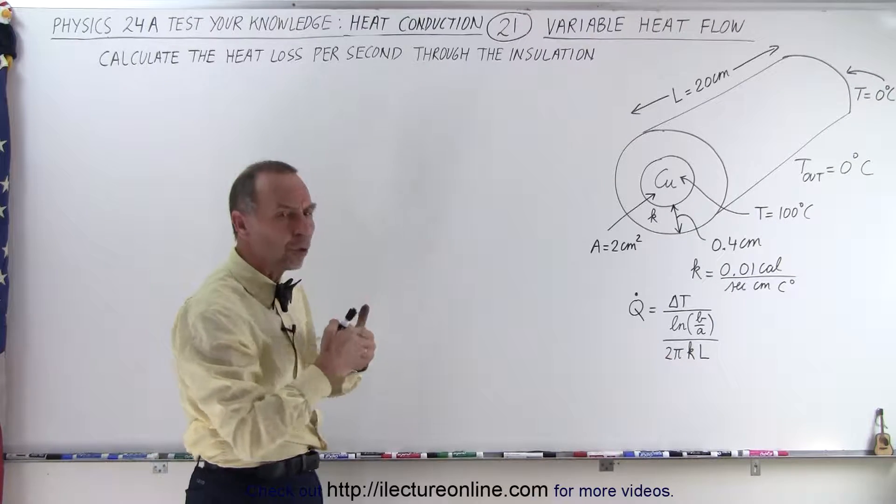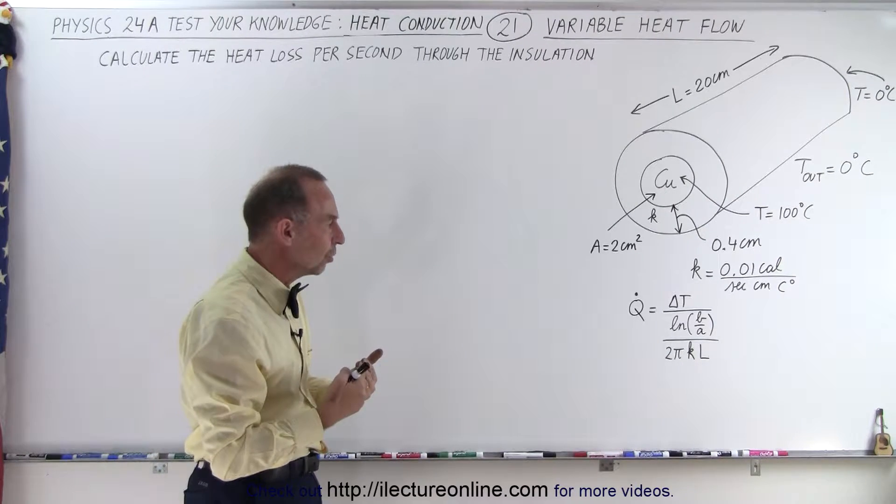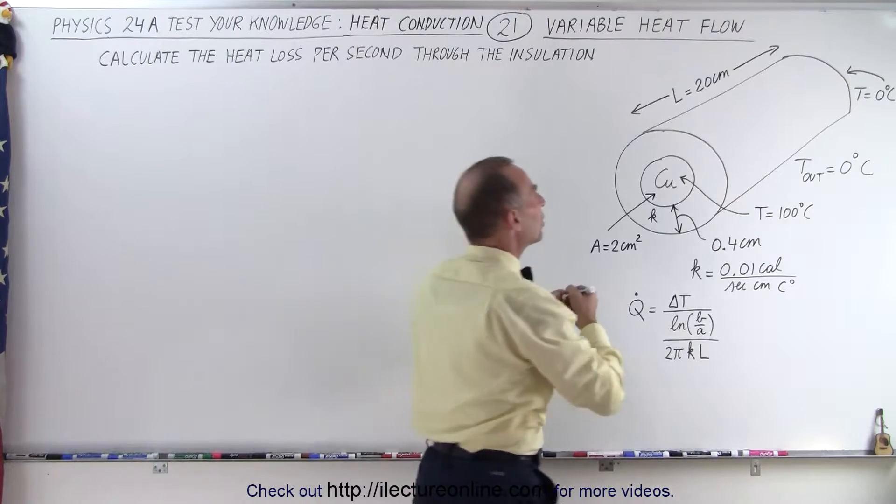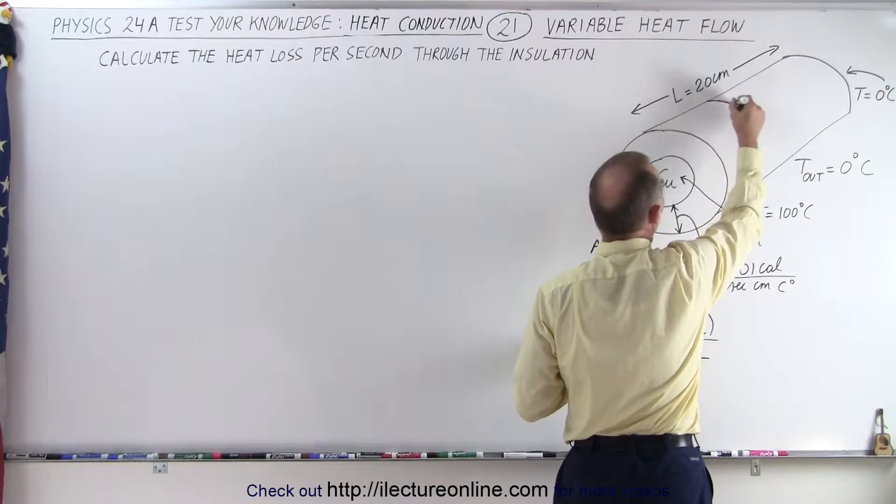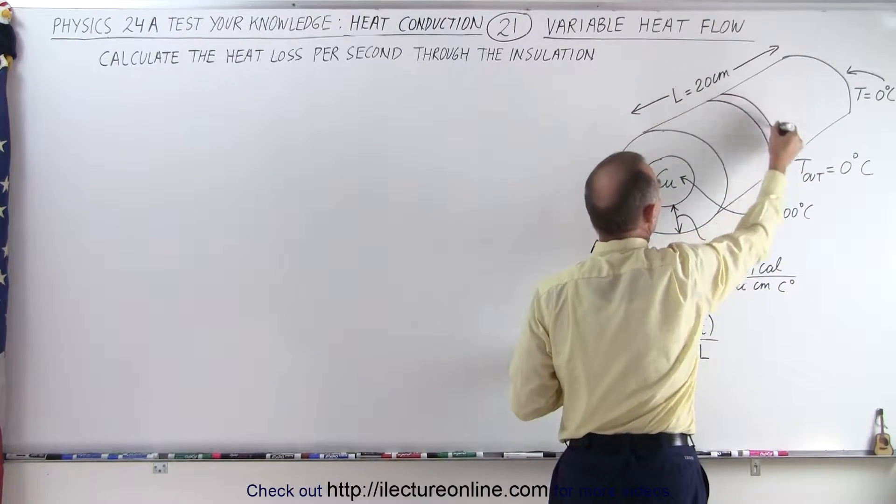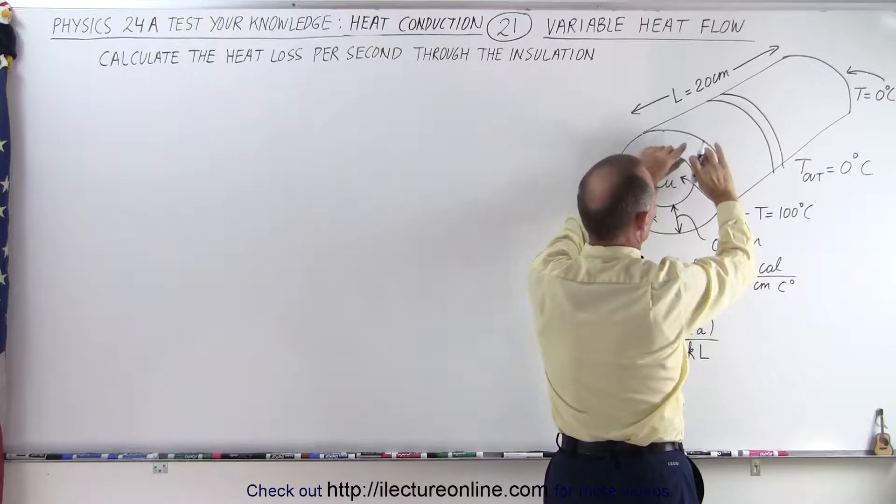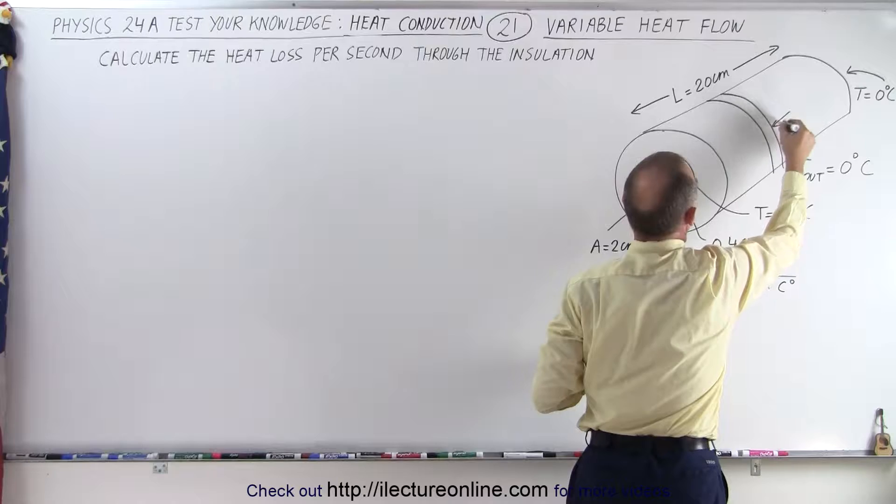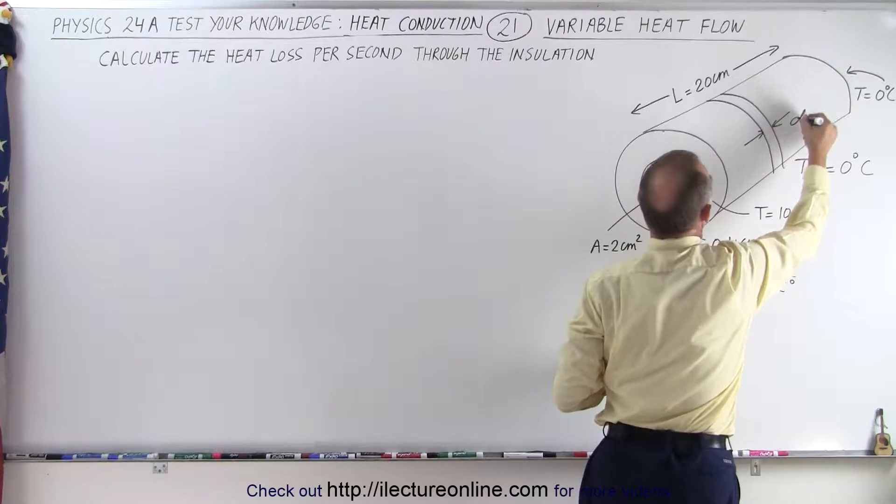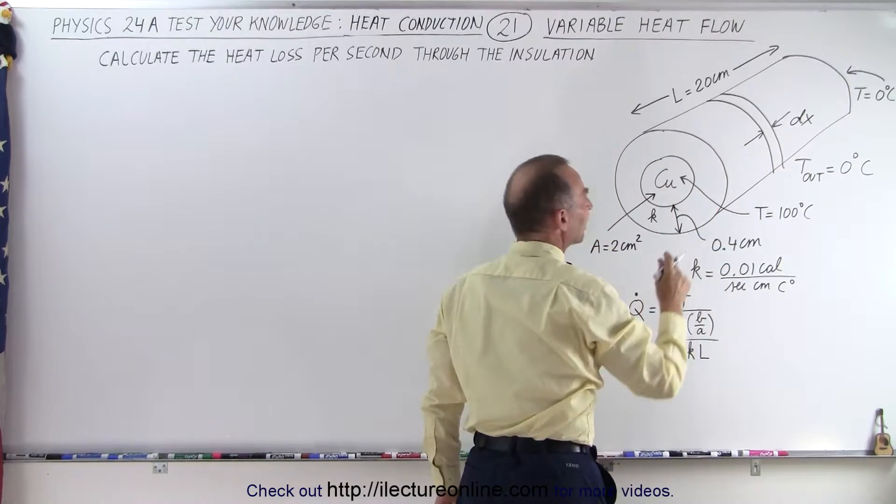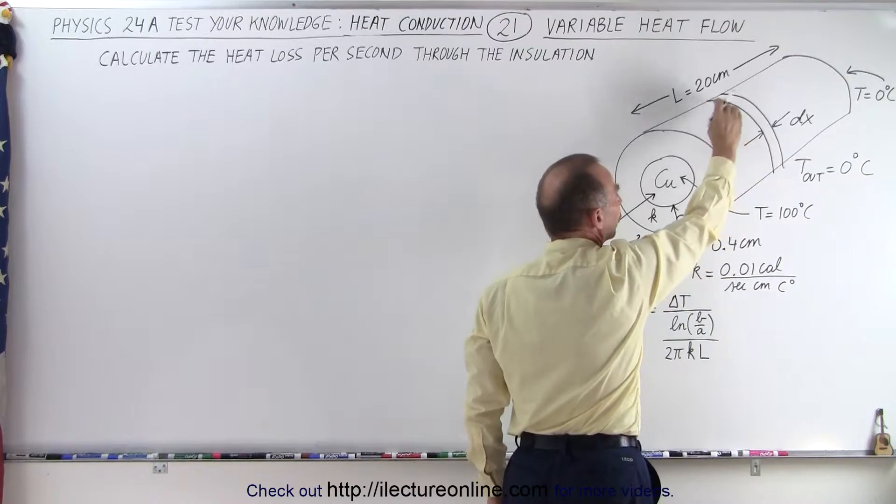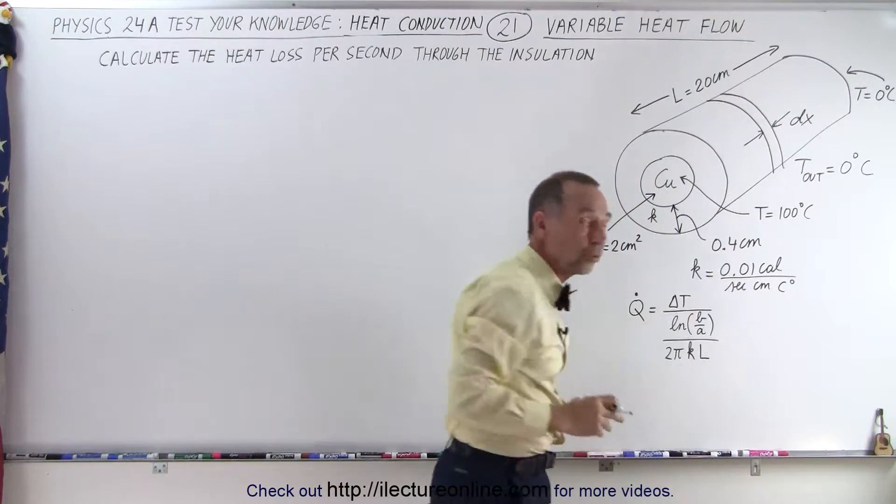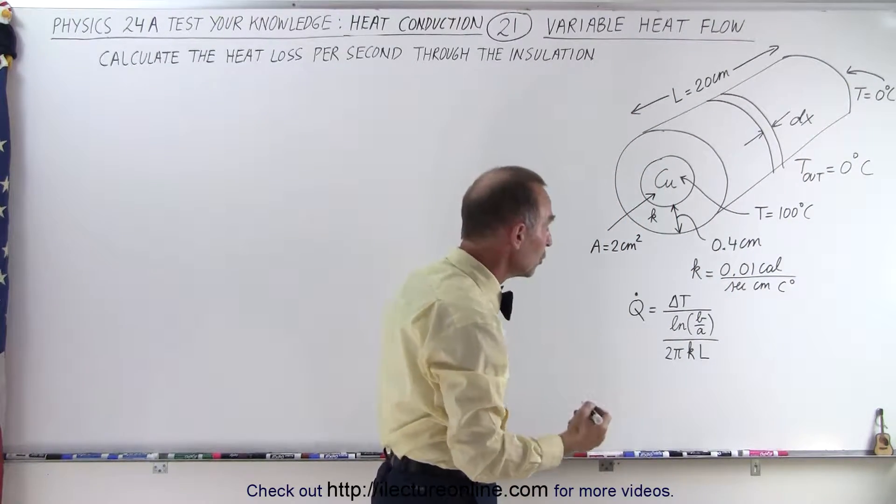But Q̇ is going to change, it's not a constant. So what we can imagine here is that if we take a small section in this direction right here, all the way around, so we're going to take a small little slice of that, and let's say that the width of that section is equal to dx, and then the small amount of heat flow through that section as compared to the whole thing can be considered to be a dQ̇.